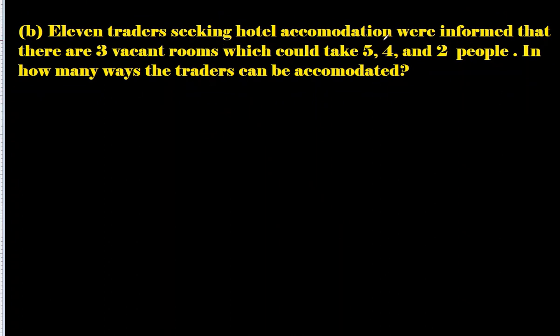Part b: Eleven traders seeking hotel accommodation were informed that there are three vacant rooms which could take 5, 4, and 2 people respectively. In how many ways can they be accommodated? So there are total 11. For the first room we will select five of them, any five in any order.